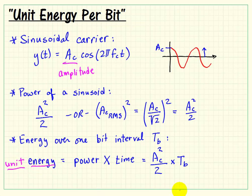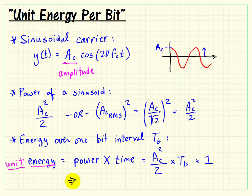The requirement for our sinusoidal carrier is that it have unit energy, which equals 1. So we equate the entire expression to 1 and solve for the amplitude that satisfies this condition. Solving for Ac, our carrier amplitude, we find that it equals the square root of 2 divided by T sub b.